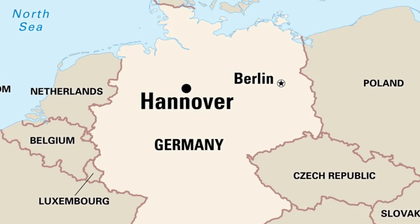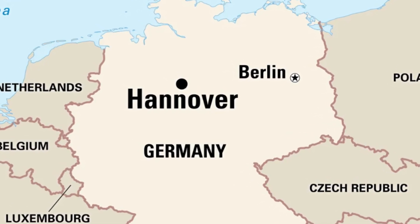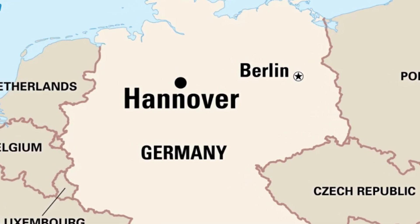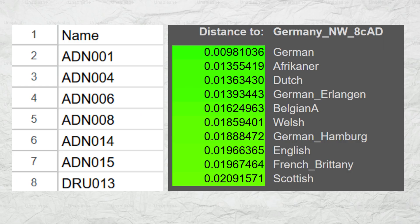Hanover's strategic location and its Saxon heritage positioned it as a key player in the political and cultural evolution of medieval Germany. For this video, I gathered seven genomes of medieval inhabitants of Hanover dating to the 8th century AD. I cherry-picked the samples, excluding those with a Scandinavian genetic profile, and only including those with a genetic profile that resembles modern Germans.